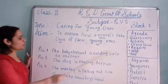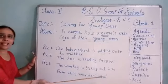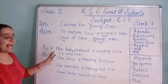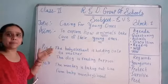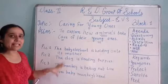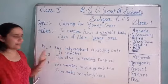Okay student: pic 1, the baby elephant is holding onto its mother. Second, the dog is feeding puppies. Third, the monkey is taking lice from the baby monkey's head. Meaning, the animals are trying to take care of their babies — who apne babies ki care kar rahe hain.